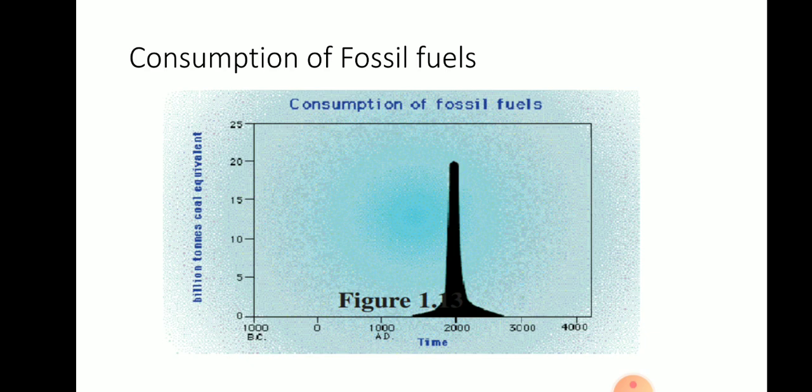Coal usage reached its maximum around the year 2000. Afterwards, in certain years — for example 2030 and 2050 — coal usage is continuously and abruptly decreasing, because coal and fossil fuel reserves are continuously depleting. When we reach the year 2500, we will have nil resources of coal or fossil fuels.